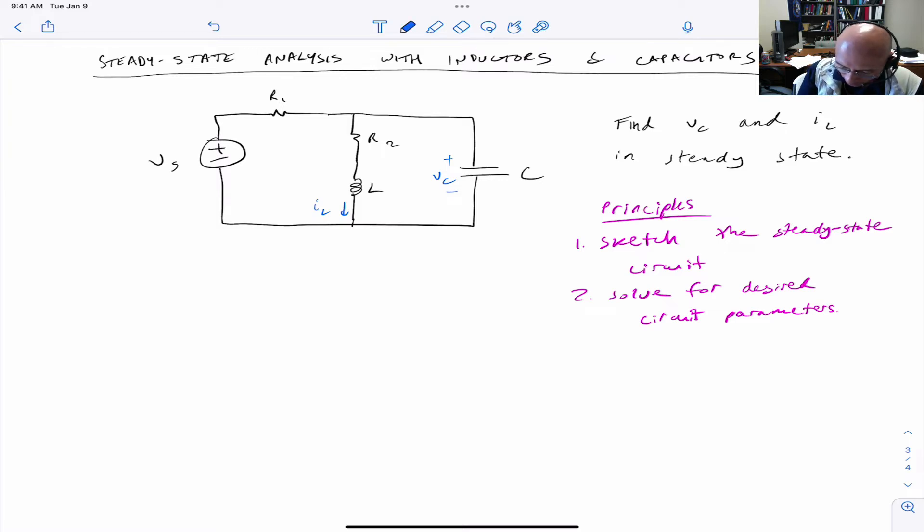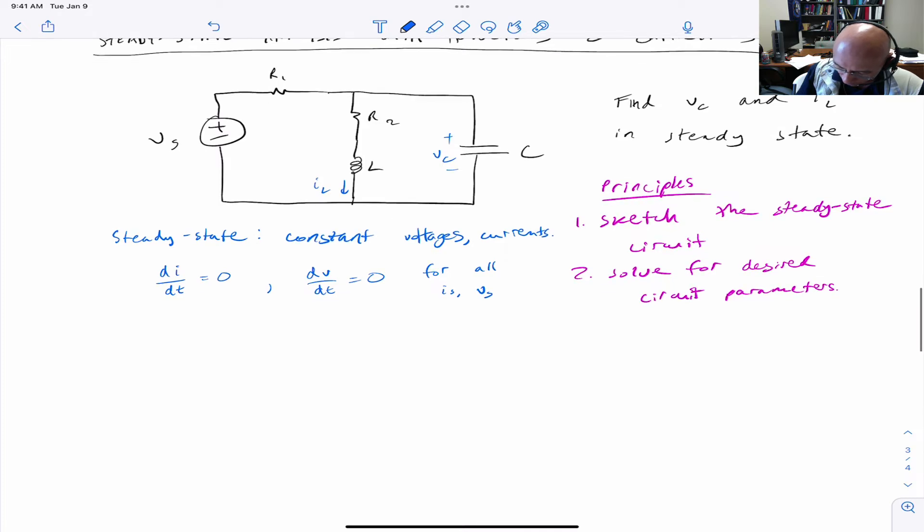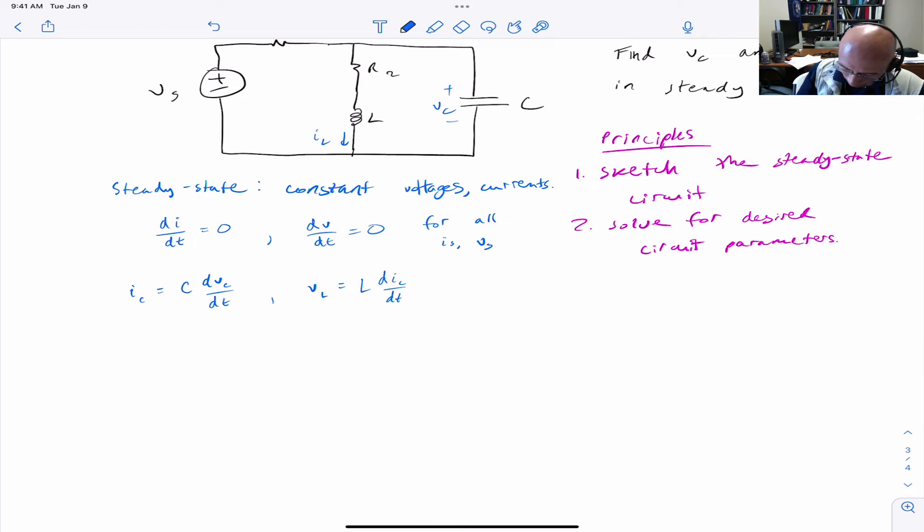So as a reminder, what does steady-state mean? Well, it means that the currents and voltages are constant. That means that the derivative for any voltage or current in the circuit is zero at steady-state. And because of the relationships given here,